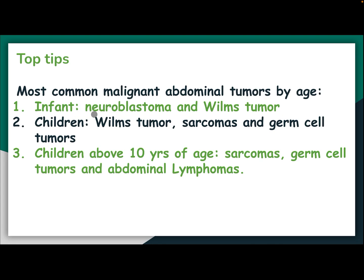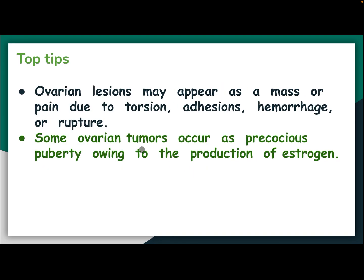The most common malignant abdominal tumors by age: in infants — neuroblastoma and Wilms' tumor; in children — Wilms' tumor, sarcoma, and germ cell tumor; in children above 10 years of age — sarcoma, germ cell tumor, and abdominal lymphoma.